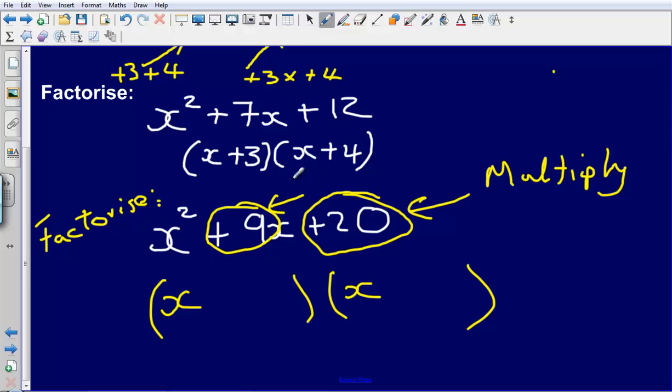So what two numbers will multiply to make 20 but sum to make plus 9? So that will be plus 5 and plus 4.